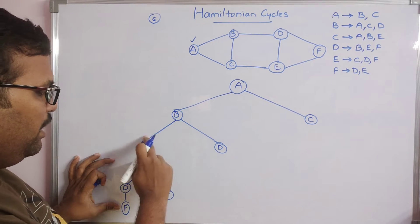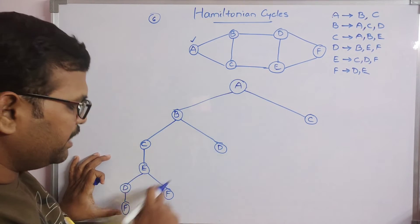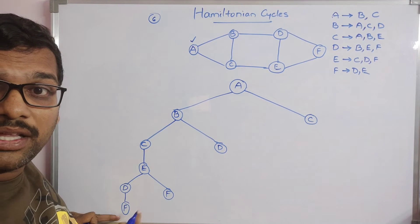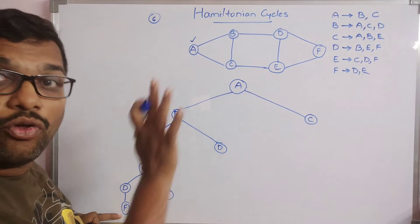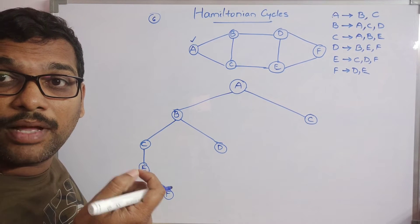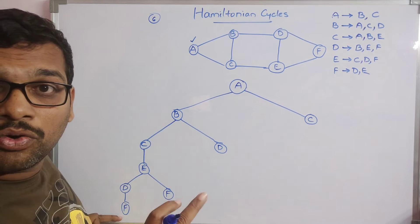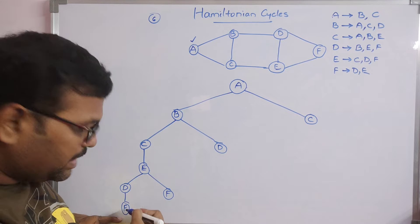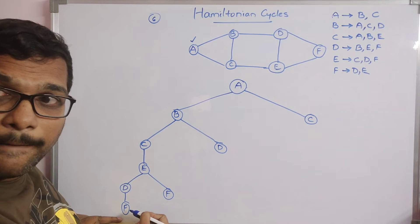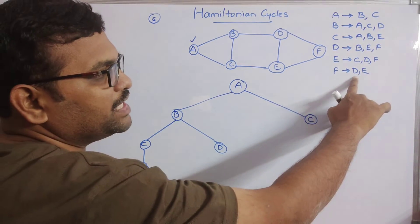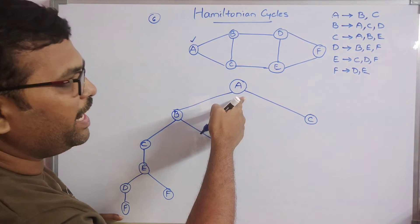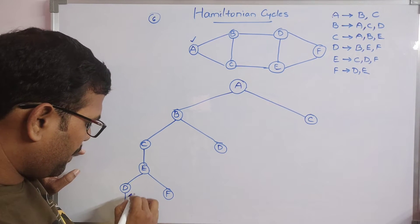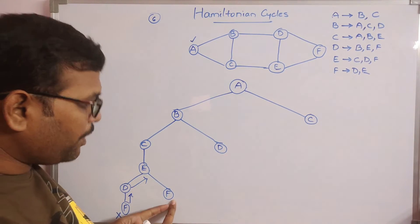In this path A-B-C-E-D-F, there are six nodes — one, two, three, four, five, six — all nodes have been visited. F is the last node, so we need to check whether there is an edge between F and A to form a Hamiltonian cycle. F has edges to D and E only, so there is no direct connection from F to A. This path is not feasible — backtrack.